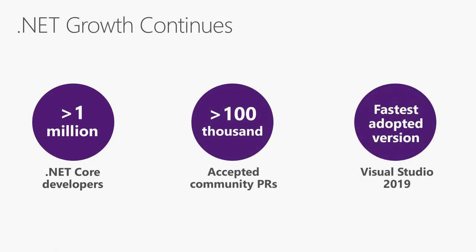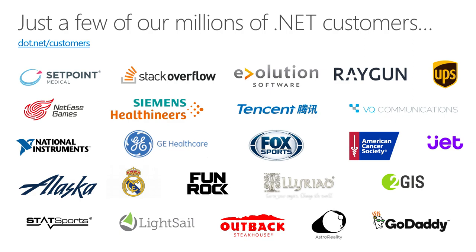I'm super excited to talk about .NET Core and how far it's progressed. It's only been out for a few years and we've already grown to over a million active .NET Core developers. .NET Core is our first fully open source .NET framework. In that short time, we've taken 100,000 PRs — we're building this with the community. Visual Studio 2019 is the fastest adopted version of Visual Studio ever, and we have an awesome customer page on the .NET website you can check out after the conference.